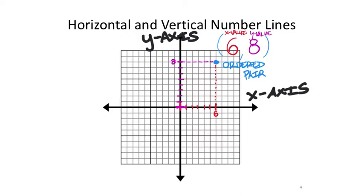There are a couple other things we need to know on these graphs. This point right in the middle — you can see that the x-axis and the y-axis both meet where the x value is zero and the y value is zero as well. So the two axes will always come together right there.